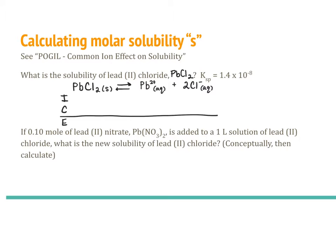In this video, we will be looking at two types of calculations that can be done for insoluble salts. First, we will be looking at how a common ion can affect the solubility of a relatively insoluble salt. Then, we will be looking at how to predict if a precipitate will form when two salts are mixed. We are going to start with lead chloride, which is a relatively insoluble salt. We can tell it is insoluble because the solubility product is 1.4 times 10 to the negative 8th — a relatively small K value.